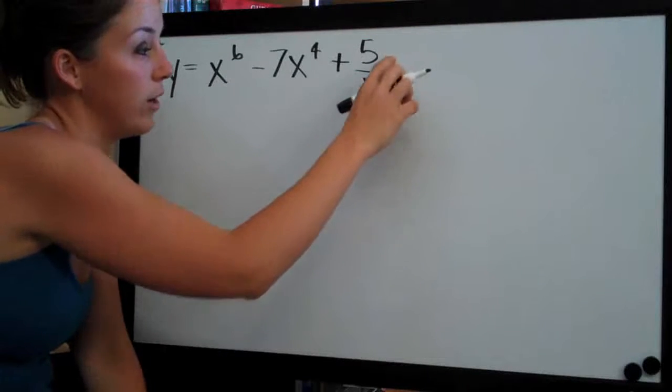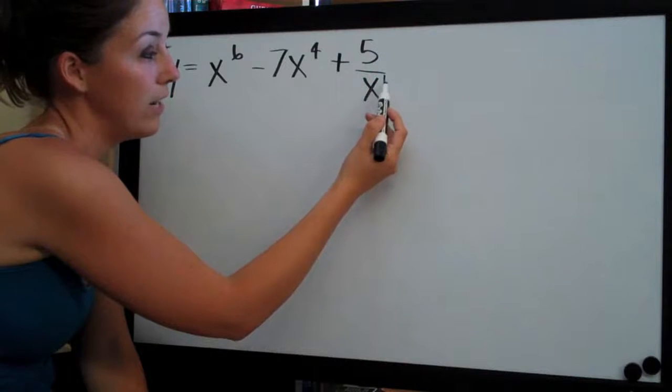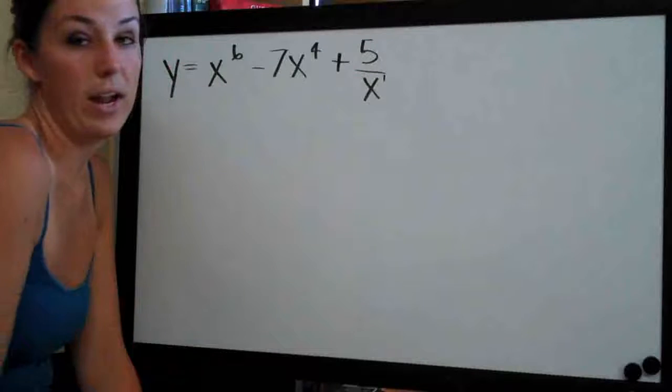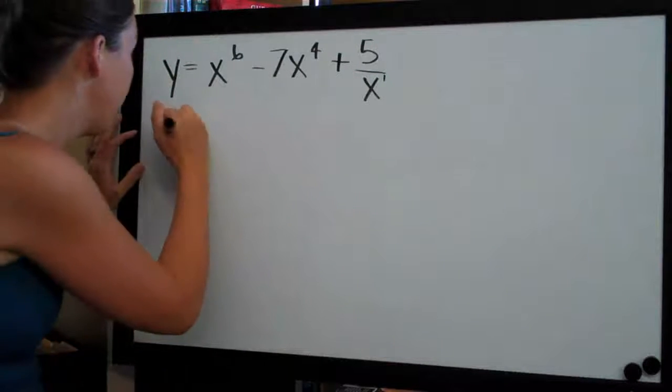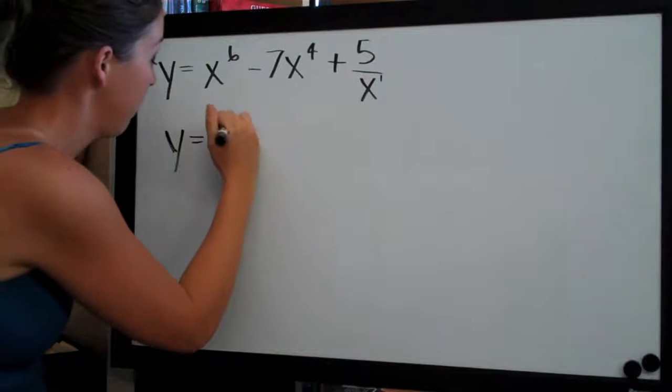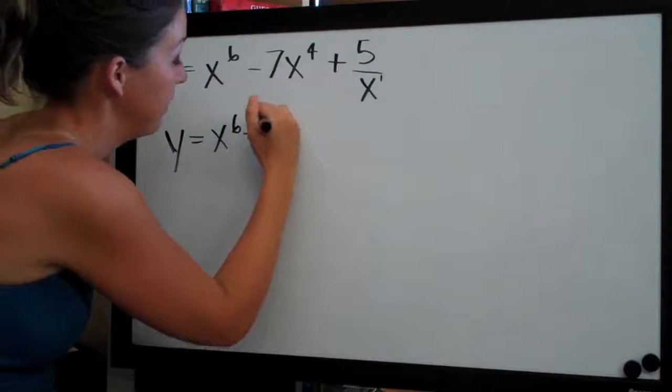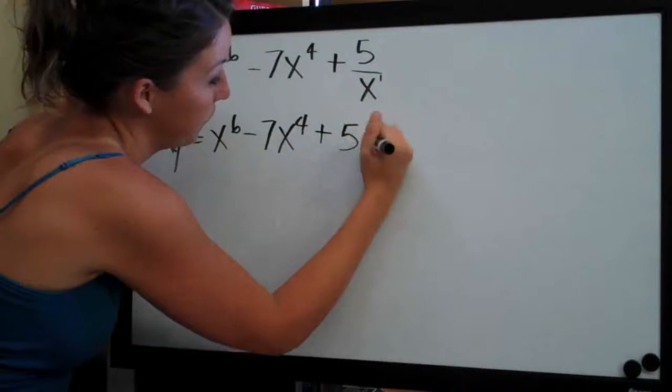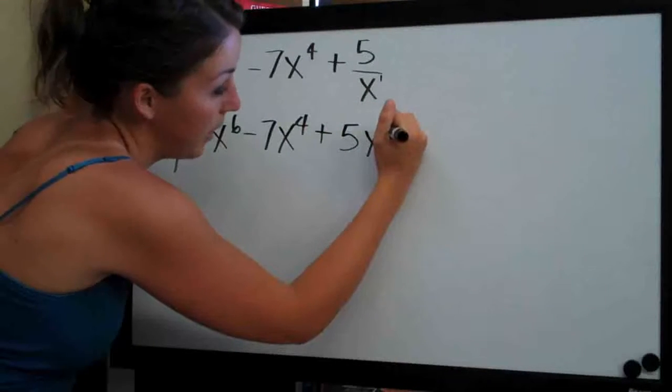And if we move that to the numerator, all we have to do is change the sign on the 1 from a positive to a negative and that will allow us to bring it up to the top. So if we just convert that fraction, we'll get x to the 6th minus 7x to the 4th plus 5 times x to the negative 1.